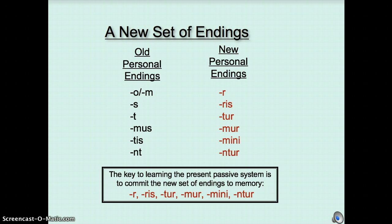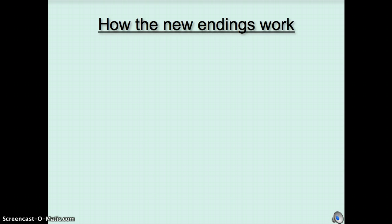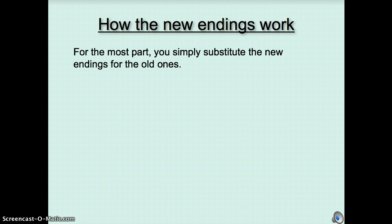How these new endings work. For the most part, you're going to simply substitute the new endings for the old ones. So for example, if we have amat, we take off the t in amat, and then we would put on amatur, the tur in amatur right there.